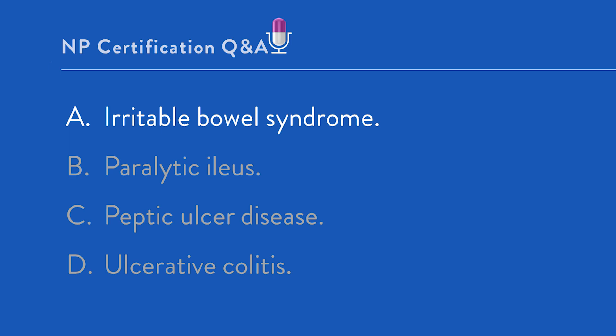IBS — irritable bowel syndrome, our best answer — is a functional disease where there is no anemia, the pain is recurrent, and weight is stable. IBD, which includes ulcerative colitis, typically involves bouts of flares with severe abdominal pain, diarrhea, unintended weight loss, and blood in the stool. IBS and IBD can sound similar, but they're very different diseases. Option D, peptic ulcer disease, is typically associated with newer onset intermittent upper abdominal pain — and remember, this patient is reporting lower abdominal pain.